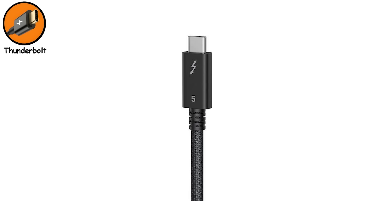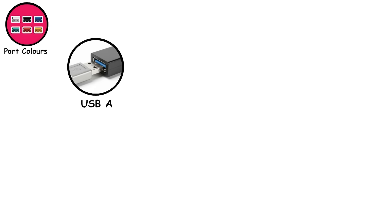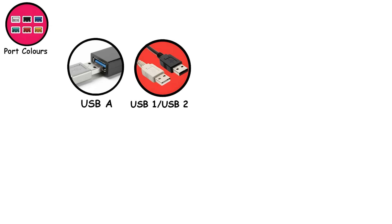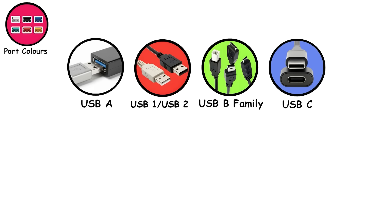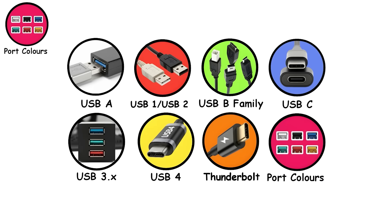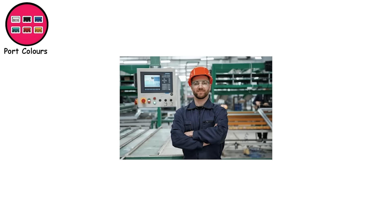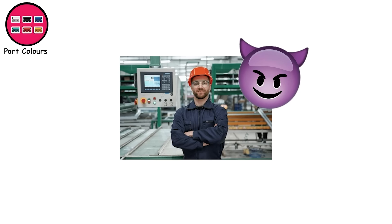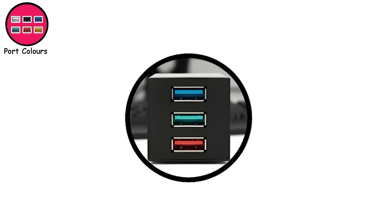So people plug in a pricey Thunderbolt SSD expecting lightning-fast performance and get normal USB-C speeds instead. But whenever you do have Thunderbolt, you instantly know you're working with the top tier — faster data, more displays, more power, more everything. It's basically USB-C on steroids. Just remember to check for that little lightning bolt. Now, USB ports come in different colors, each hinting at what speed or feature it supports.